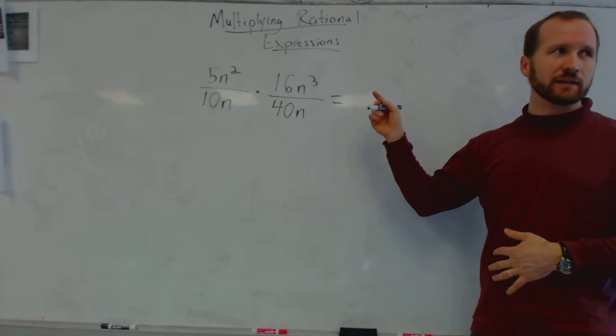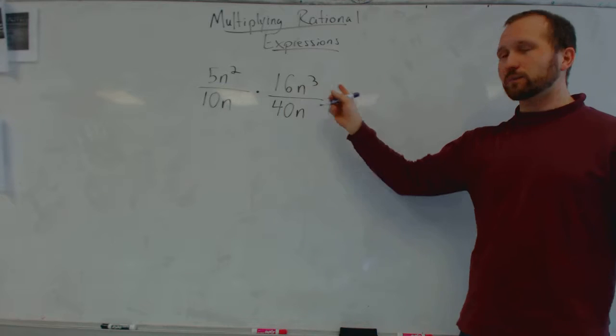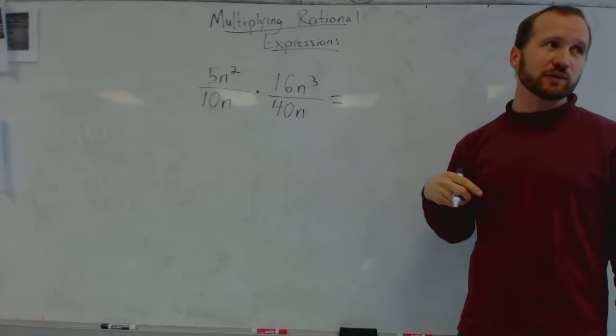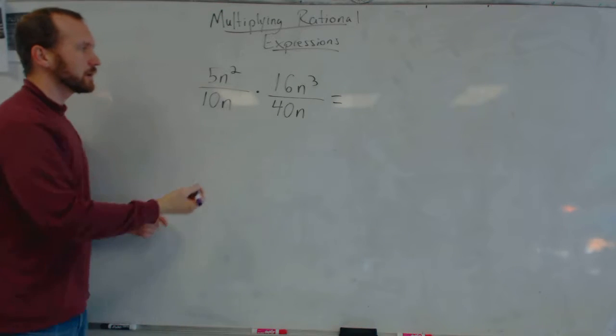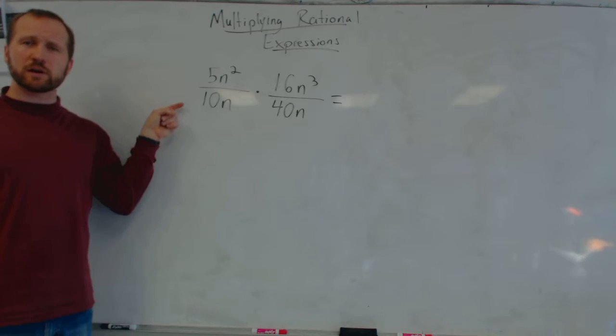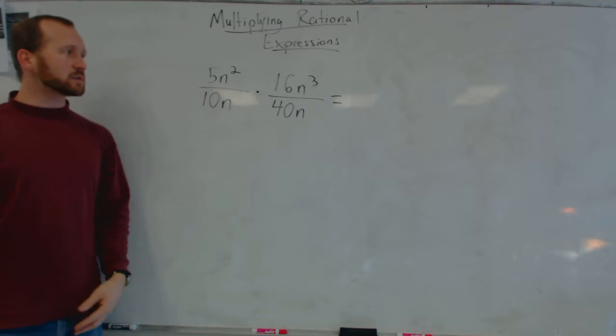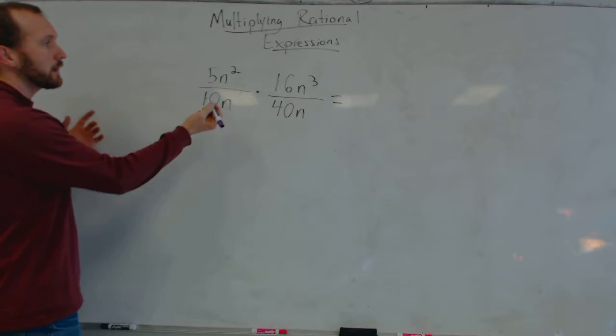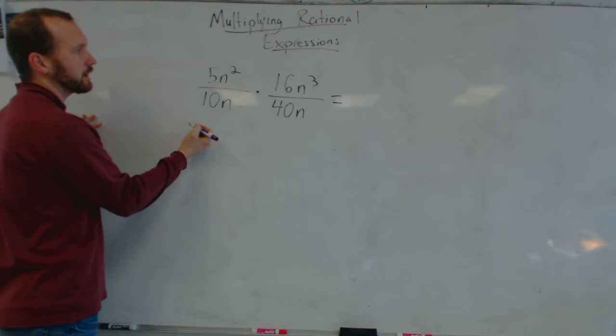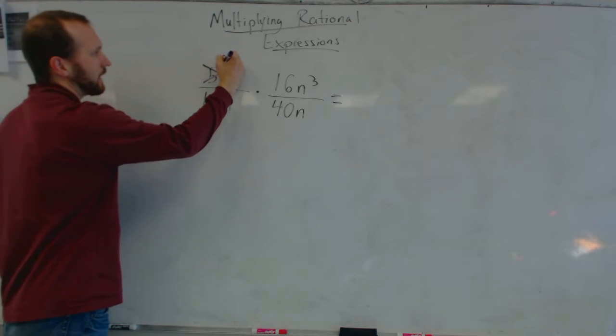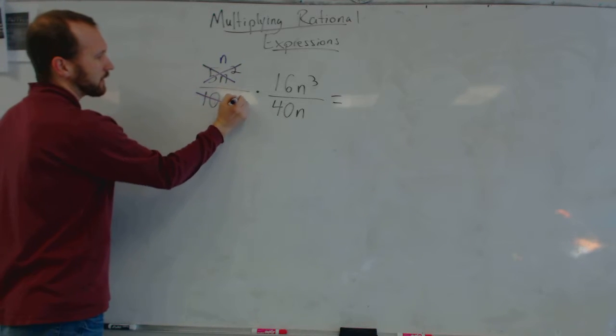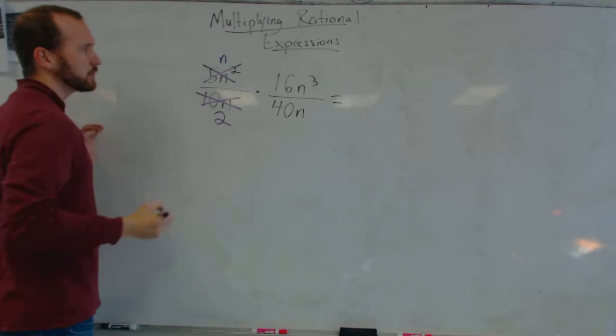So the key with these, I think, is not to multiply, but to first reduce. So if we're looking at a fraction like this, what do you see here that could be reduced already before we even multiply? Just shout it out. The n's and the 5, right? So if I divide this by 5n, I now just have n left. If I divide this by 5n, I now have 2 left.